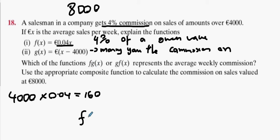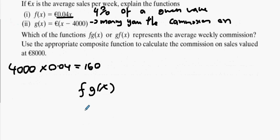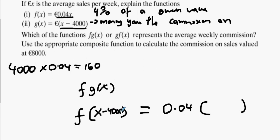f(g(x)). First of all, what's the input for f? f is 0.04 of your input. What's your input? g(x), which is x minus 4000. Alright, now is everybody happy that f(g(x)) is 0.04 times (x - 4000)?